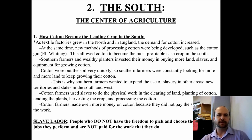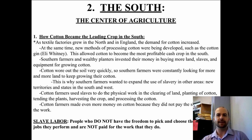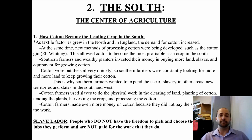Cotton became the leading crop in the South because the North and England had a huge demand for cotton. The North and England had factories that depended upon the raw material of cotton to make their cotton cloth, their textile. Also, at the same time, new methods of processing cotton were being developed, such as the cotton gin.